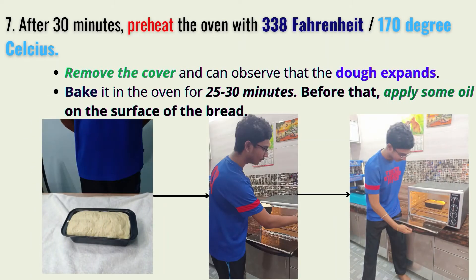After 30 minutes, preheat the oven to 338 Fahrenheit or 170 degrees Celsius. Remove the cover from the bread pan — you can observe that the dough has expanded compared to the original. Bake it in the oven for 25 to 30 minutes. Before that, remember to apply some oil on the surface of the bread, as oil provides moisture while baking. Even though butter is an excellent fat option for baking in terms of flavor and texture, oils can make a bake that is just as rich and flavorful.